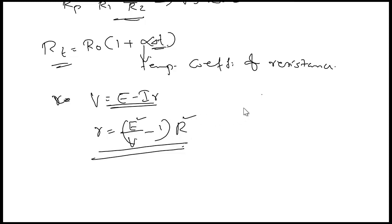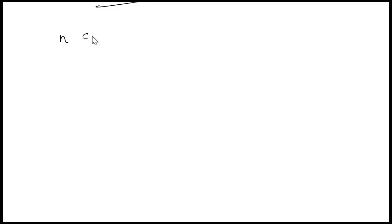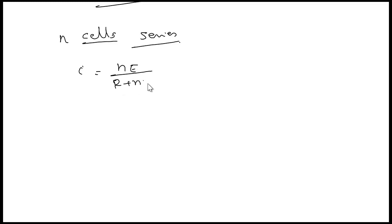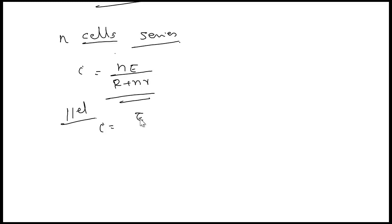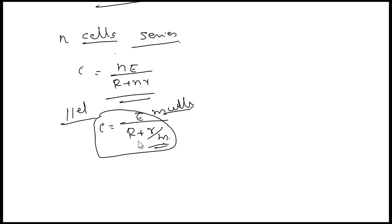Next, we discuss the combination of cells. If N identical cells are connected in series, the current in the circuit is I = NE/(R + Nr). If M cells are connected in parallel, then I = E/(R + r/M), where R is the external resistance.